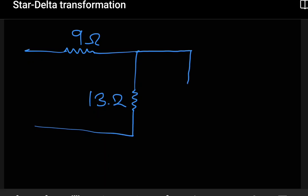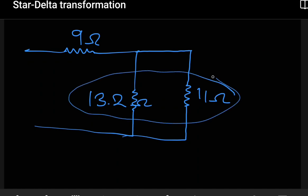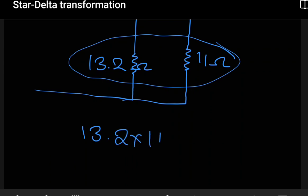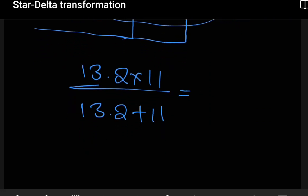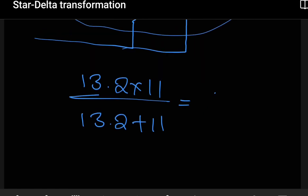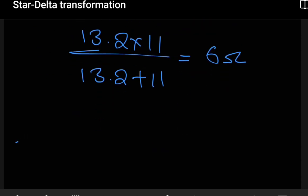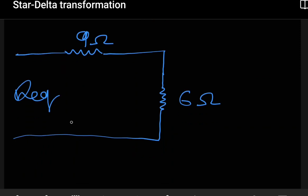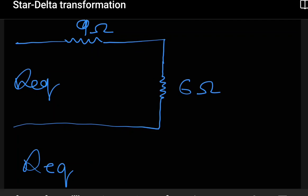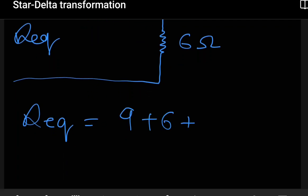So now we see that 13.2 is parallel to the 11 ohms. We can combine them again: 13.2 by 11 divided by 13.2 plus 11. This gives us 6 ohms. So our circuit now becomes the 9 ohms in series with the 6 ohms. In the end, our equivalent resistance altogether will be the series connection of 9 and 6, which is just addition, and this comes to give us 15 ohms. So this becomes the equivalent resistance in our circuit.